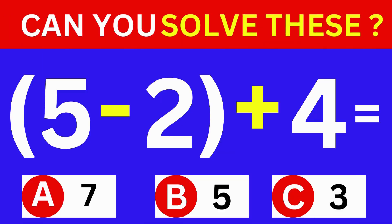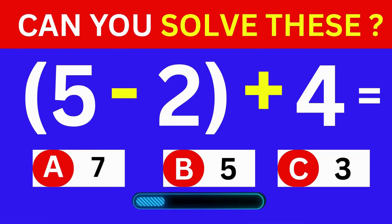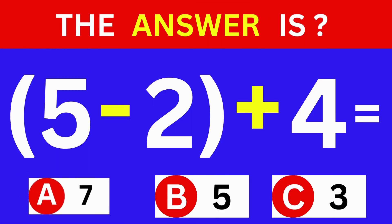5 minus 2 plus 4 equals. A. 7. B. 5. C. 3. The answer is Option A. 7.